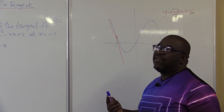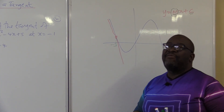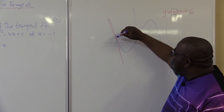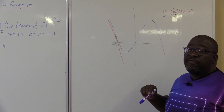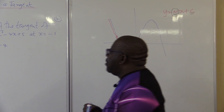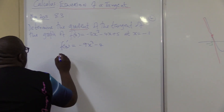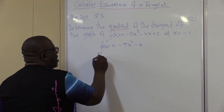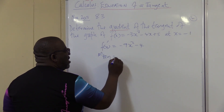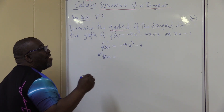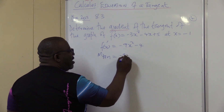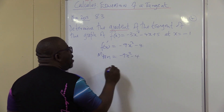That's what we call the average gradient. But we're not looking for the average gradient in this particular case. We're looking for the gradient at this particular point. The gradient of the tangent, m_tan, is nothing else but the average gradient of the tangent, which is minus 9x squared minus 4.